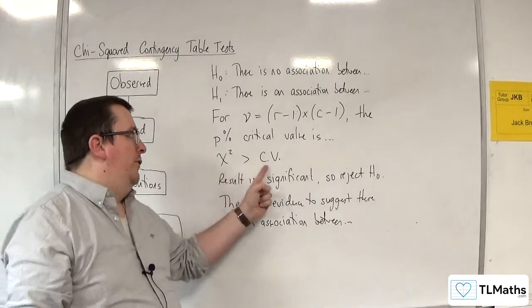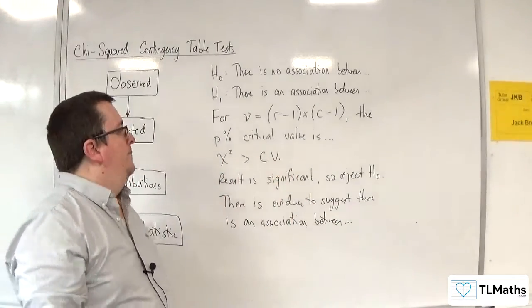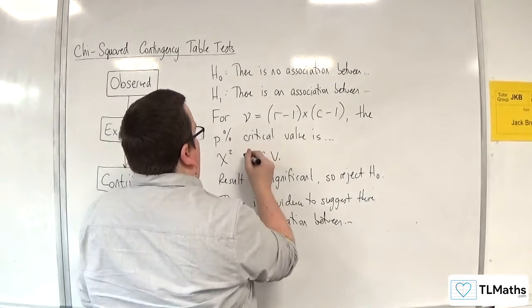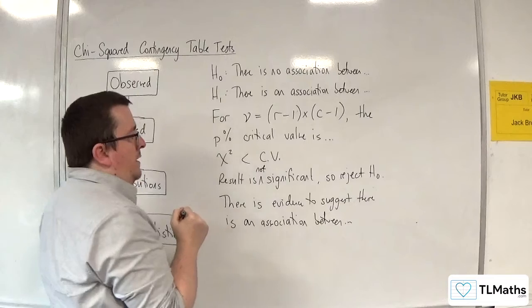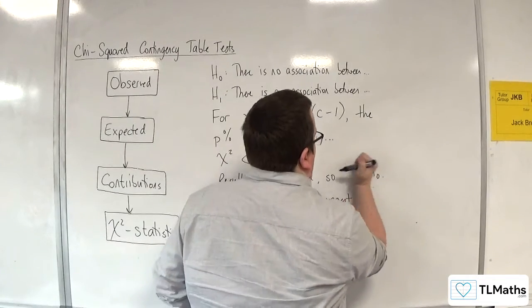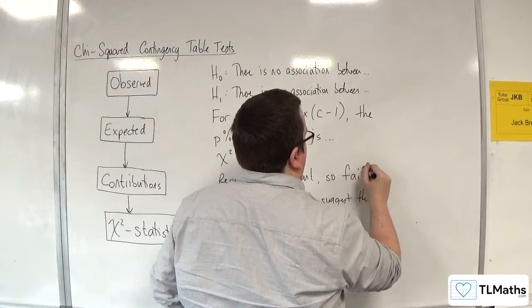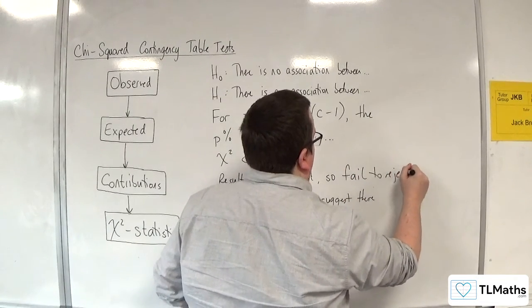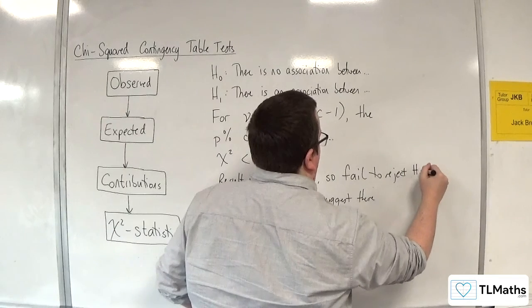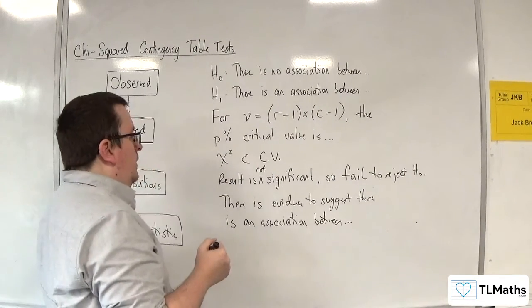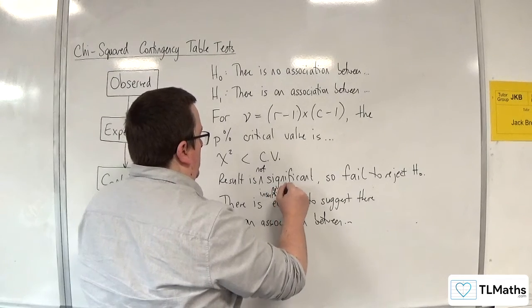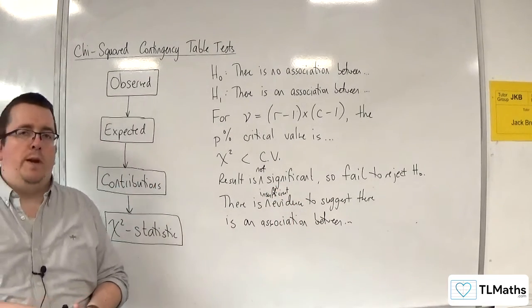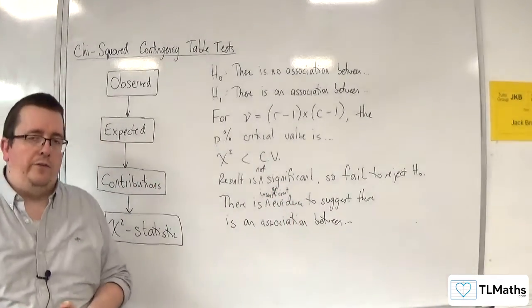That happens if the chi-squared is greater than the critical value. If it is less than the critical value, then the result is not significant. So fail to reject H0. And then, there is insufficient evidence to suggest there is an association between X and Y in context.